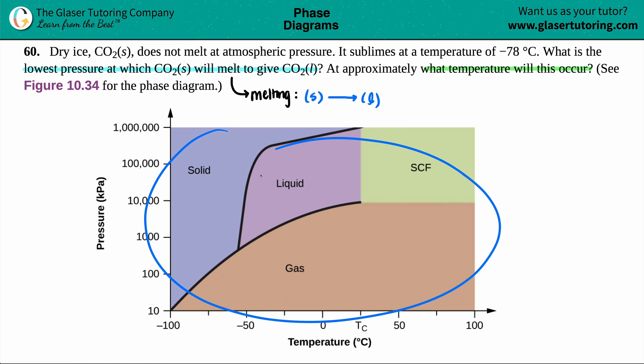On this phase diagram, there are four different phases. Carbon dioxide solid is the dark purple area. The lavender color is CO2 liquid. The brown is the gas phase. SCF stands for supercritical fluid. In this case, we want to know the lowest pressure when turning a solid to a liquid.